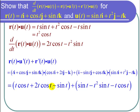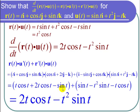Now let's combine like terms. I have t cosine t and minus t cosine t — they drop out. I have 2t cosine t. I have minus sine of t plus sine of t — they drop out. I'm left with minus t squared sine of t. So this equals 2t cosine t minus t squared sine of t. That's the same as the left-hand side, so I've shown that d over dt of r of t dot u of t equals r of t dot u prime of t plus r prime of t dot u of t.